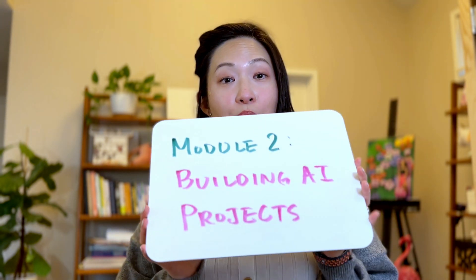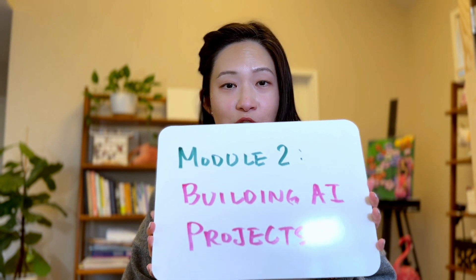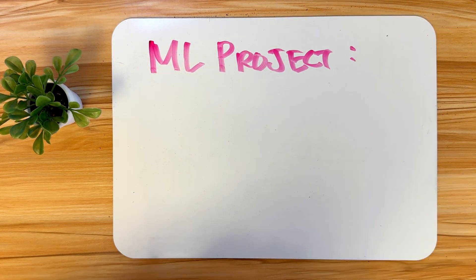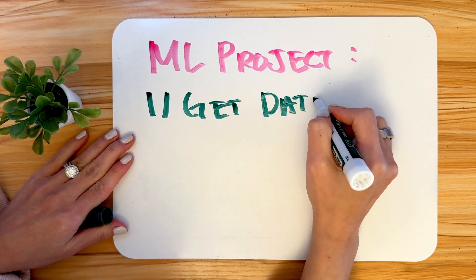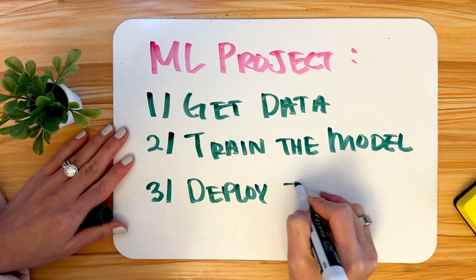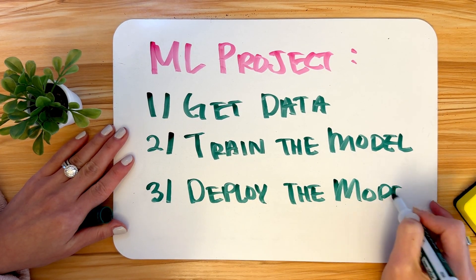Next, we're going to talk about how to build AI projects, even if you're not a super technical expert. We can divide the workflow of a machine learning project into three main phases. First, you get the relevant data, like speech recordings for a voice assistant or images for a self-driving car. Next, you train the model, teaching the AI to make predictions using data. Then you use a trained model in real-world applications like powering a voice assistant or a car's navigation system.